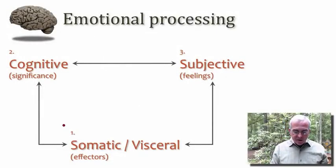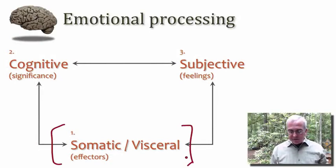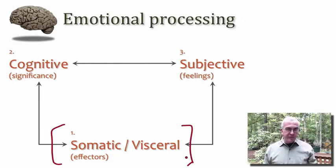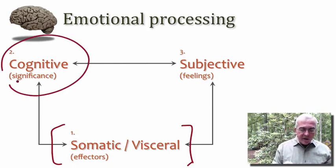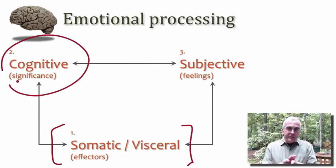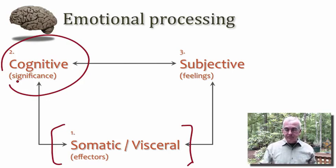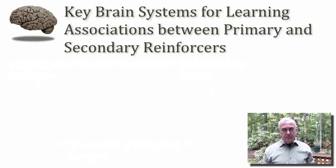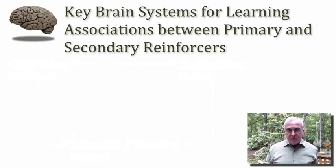That's all I intended to say regarding the expression of emotions via the motivation of our somatic and visceral motor effectors. Let's move on now and talk about how the content of emotion is integrated with other dimensions of cognition, and can provide some significance to the context in which we are integrating our experience of the moment. This brings us to our two key brain systems for learning these associations between primary and secondary reinforcers.